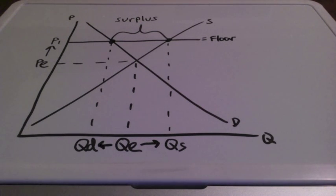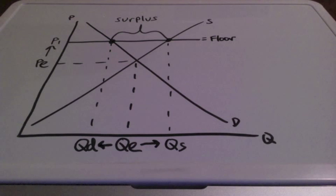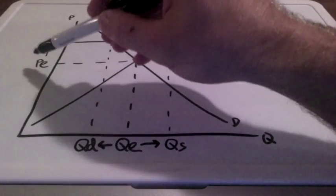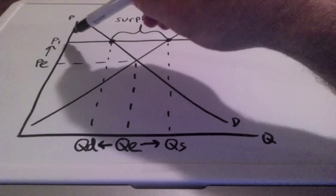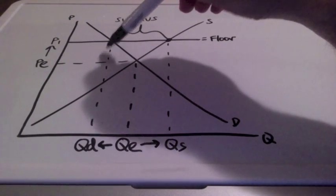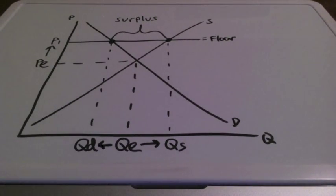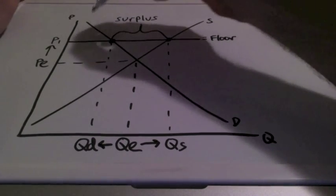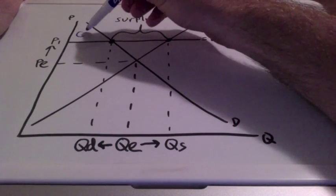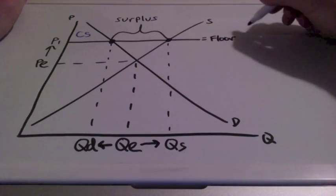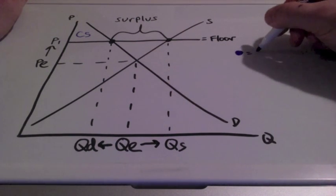Let's take a look at consumer and producer surplus when the government enacts a price control like a price floor. Remember, the goal of a price floor is to keep prices high so that products will continuously be made — in the long run it is supposed to help producers. We find our new price and we bring it to our first point, which is our quantity demanded line. From this point up to the demand curve in blue represents consumer surplus.